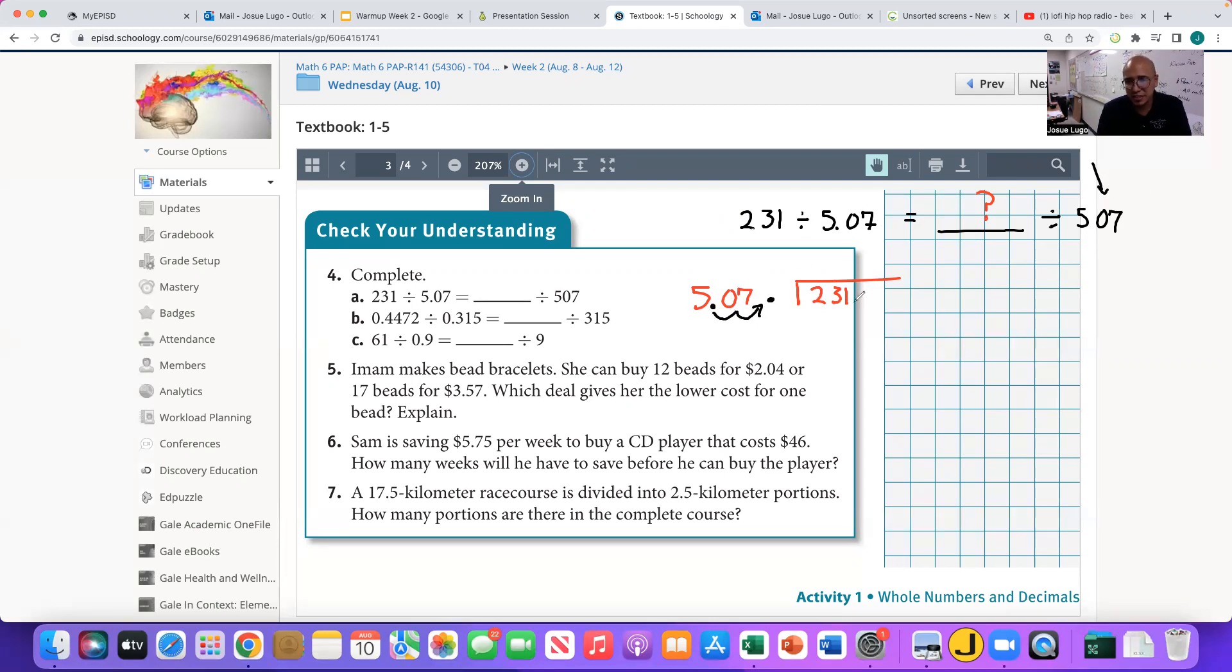And that is possible as long as you take the decimal on the dividend on the inside and also move it the same number of times to the right. In this case, I need to move it two times. And this will yield 23,100. So that means that if I rewrite this, ladies and gentlemen,